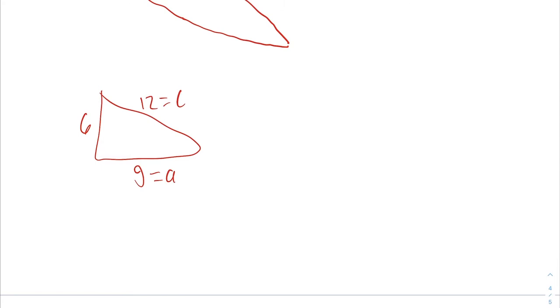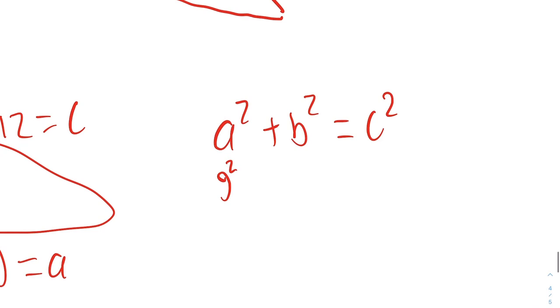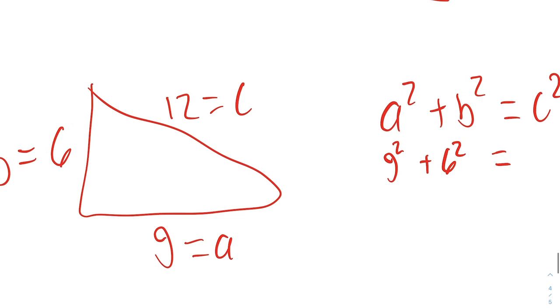Then you write the formula A squared plus B squared equals C squared. And then you just take what you labeled for A and you put it where A is. G is now going to be squared. We need the letter B next. B is the number 6, so 6 squared. C is the number 12, which means we're going to have 12 squared.